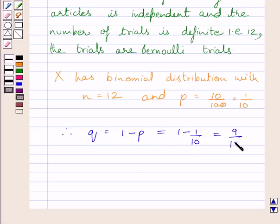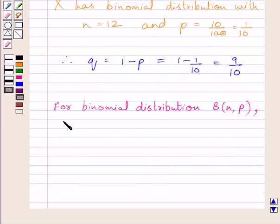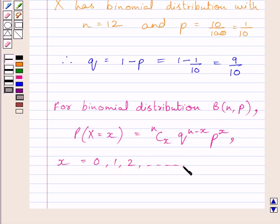For binomial distribution B(n,p), the probability of X successes is equal to nCx multiplied by q raised to the power n minus x multiplied by p raised to the power x, where x equals 0, 1, 2, till n.